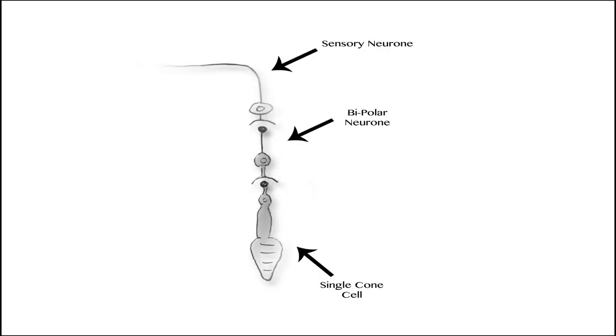Additionally, cone cells have their own bipolar neuron each, which is attached to a single sensory neuron. As such, cone cells provide higher visual acuity. As a result of this independent attachment, cone cells require high light intensity to send an impulse.